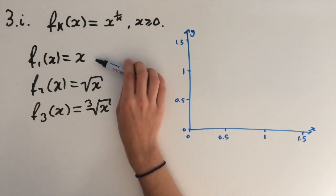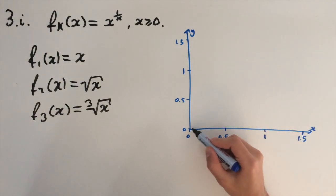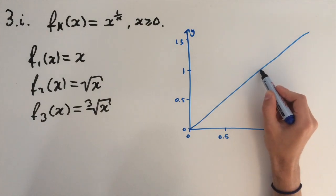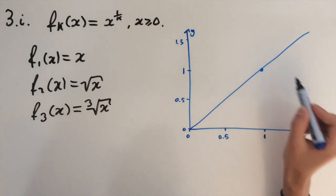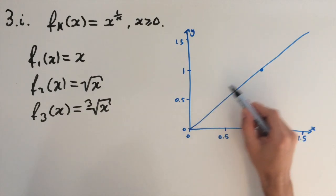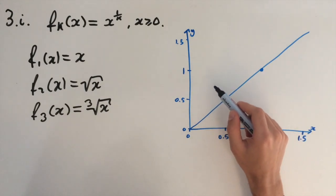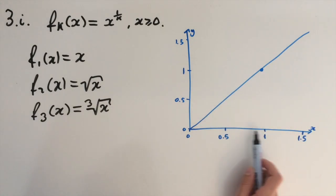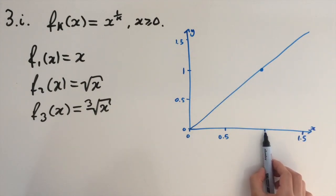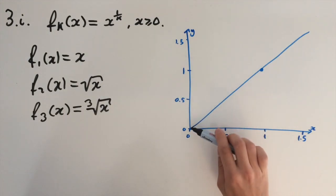So these are our three functions and we need to plot these. We start off with the first one, which is just a straight line through the origin and through the point 1, 1. Second one, the square root of x, this is a parabolic shape. Small values are made larger, because values in the range between 0 and 1 are made larger, while values after 1 are made smaller, because that's how the square root function works.